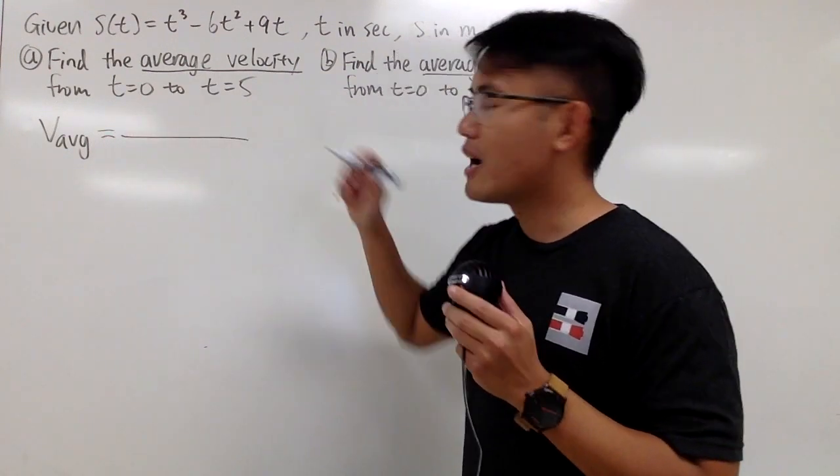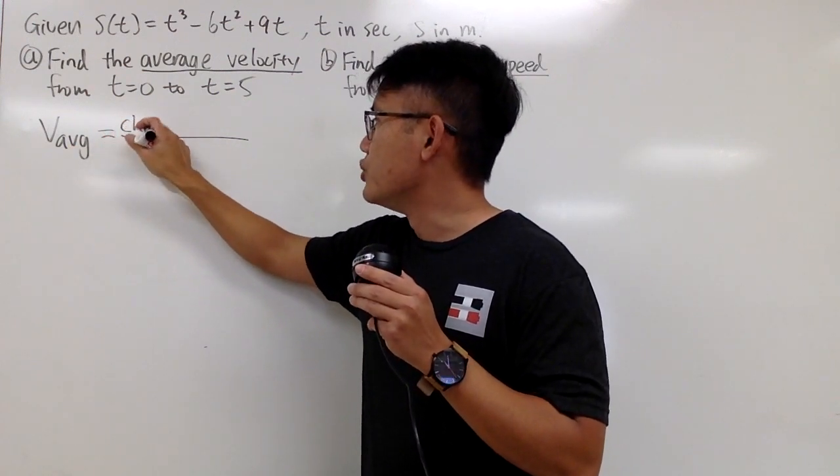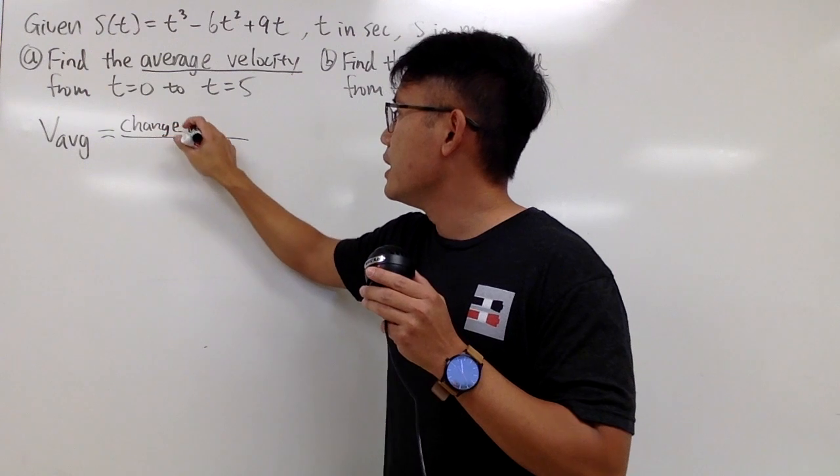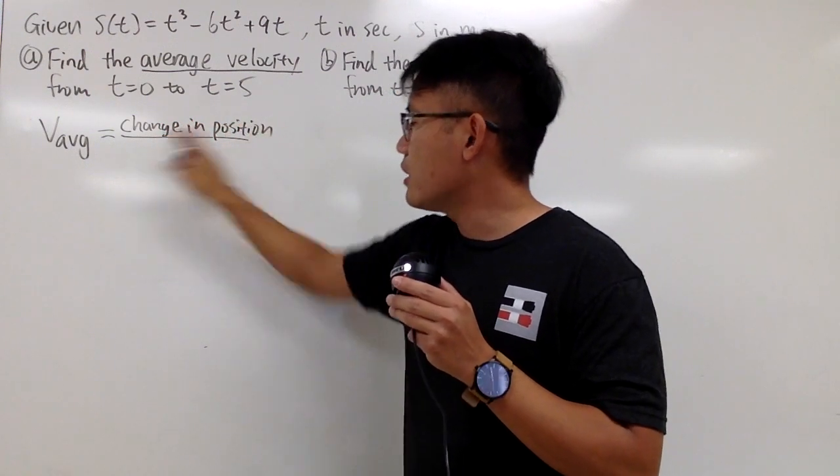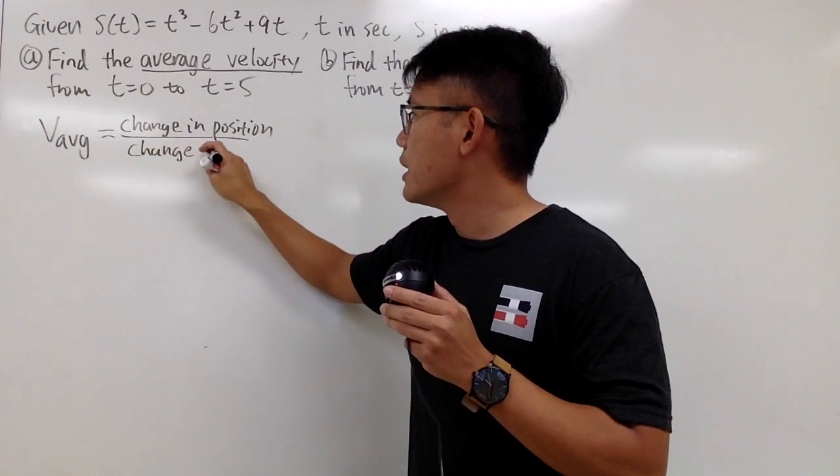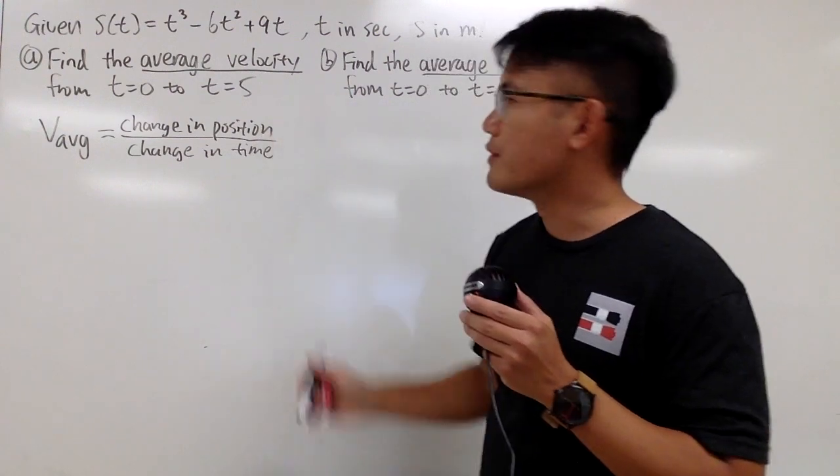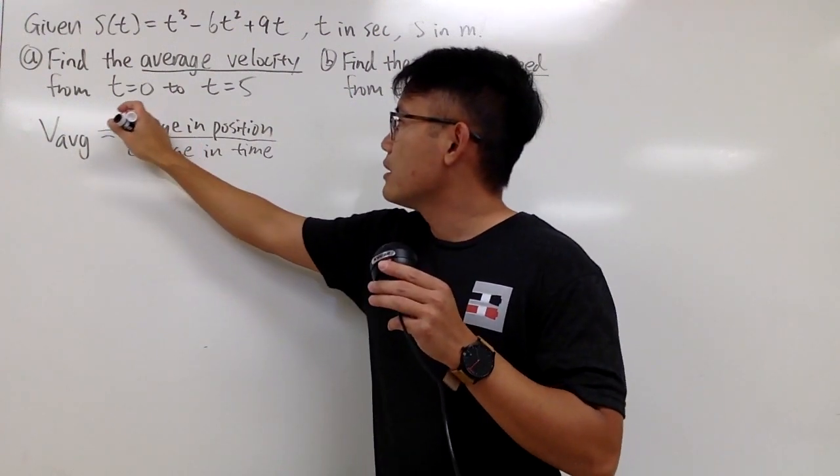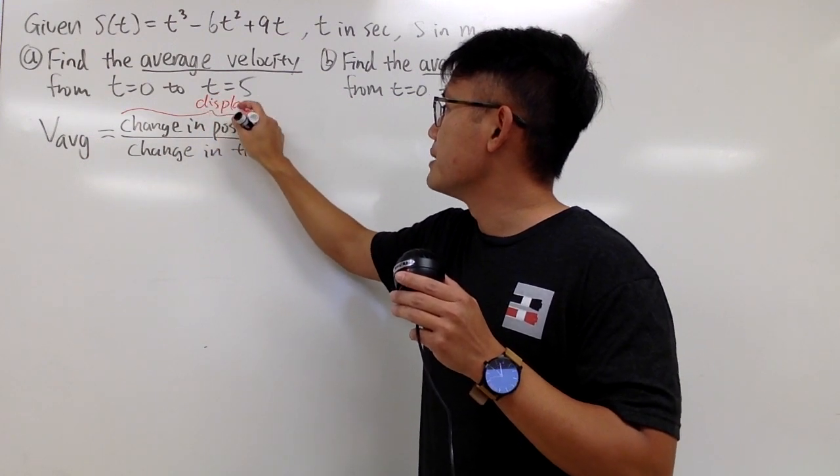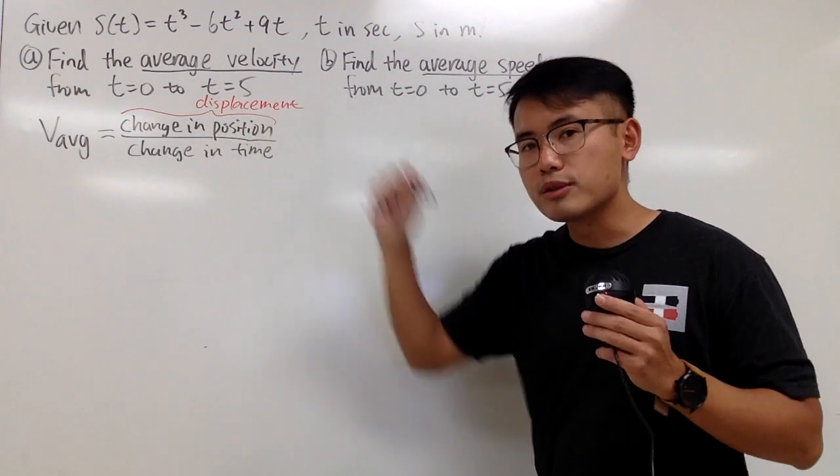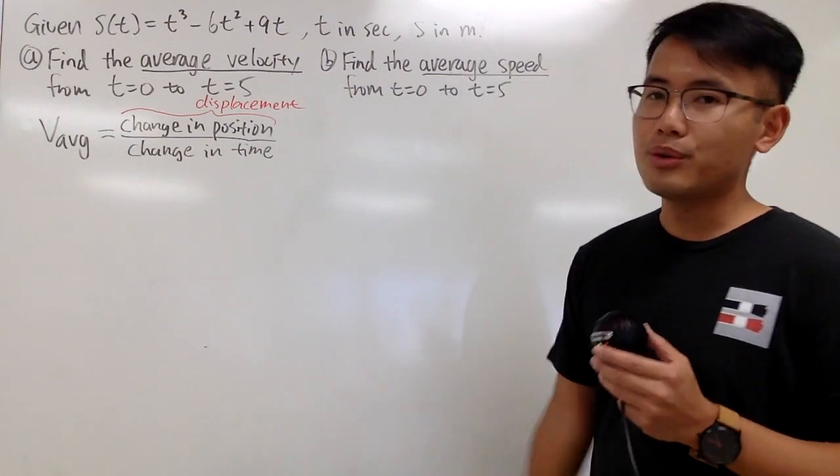So let me just write this down for you guys. Average velocity, we're doing the change in position over the change in time, namely the length of the time interval. The change in position, a lot of people like to call it the displacement. So we can also say it's displacement over the length of the time interval.